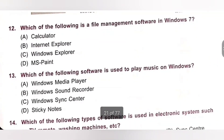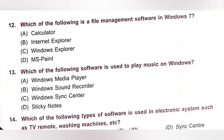Twelfth. Which of the following is a file management software in Windows 7? A. Calculator, B. Internet Explorer, C. Windows Explorer, D. MS Paint. Windows Explorer is a file management software in Windows 7. Option C is the correct answer.